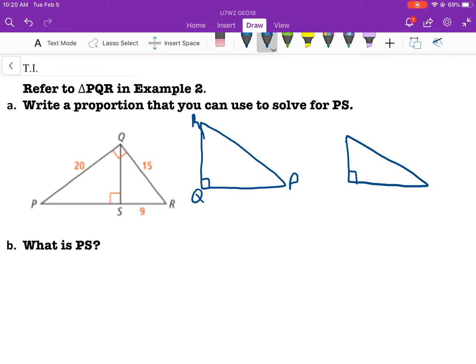90, 90. And this would be P, this would be Q, and this would be S. It's asking us to write a proportion that you can use to solve for PS. So we know that this is 20. And we know that this is 12. So we can say that QP would be X squared plus 12 squared is equal to C squared, where this is C.